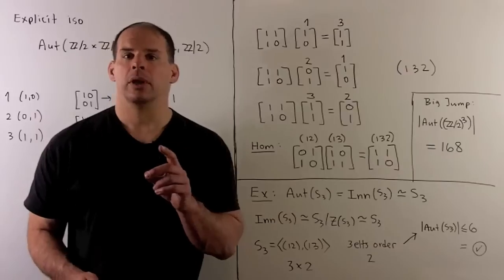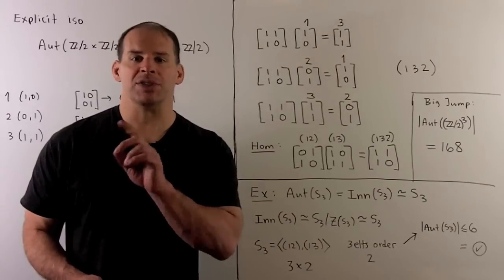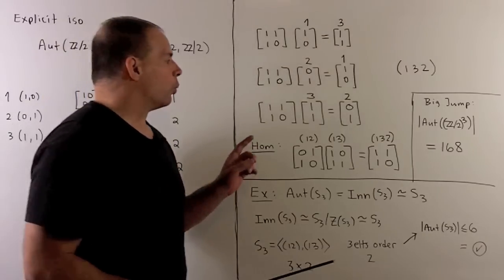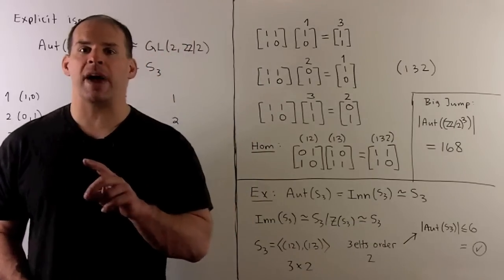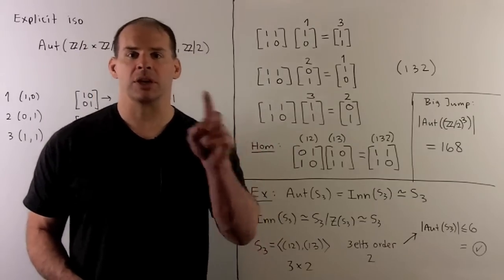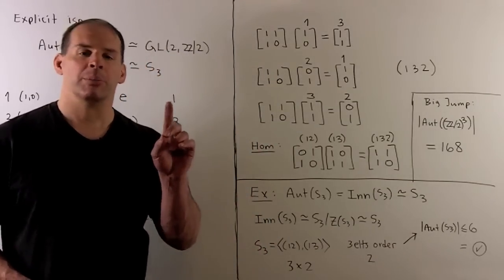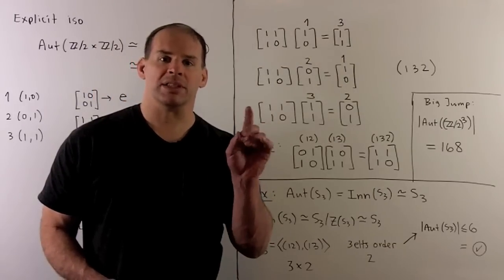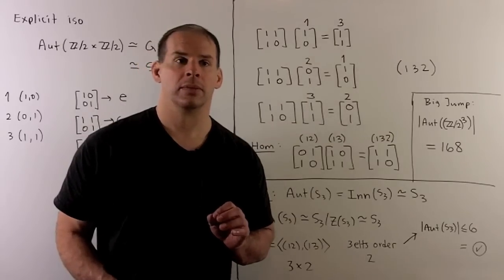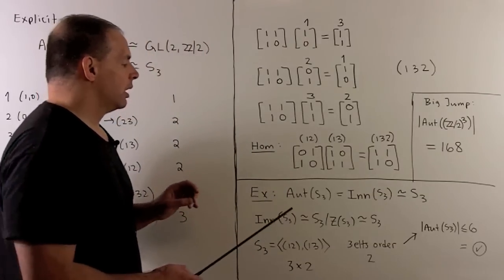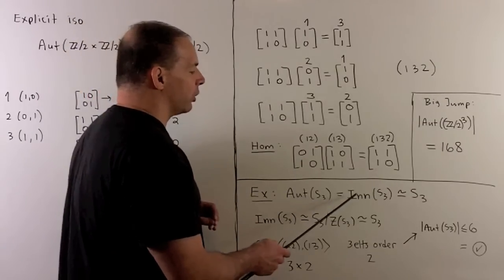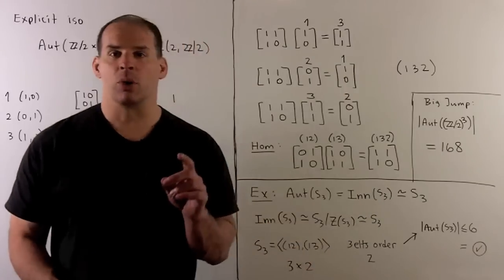For Z2 × Z2 × Z2, there's a big jump: where we had 6 automorphisms with two factors, we have 168 elements with three factors. That group lends itself nicely to tricks from linear algebra. As a final example, let's consider the automorphism group of S3, which equals the inner automorphisms of S3, which is isomorphic to S3.